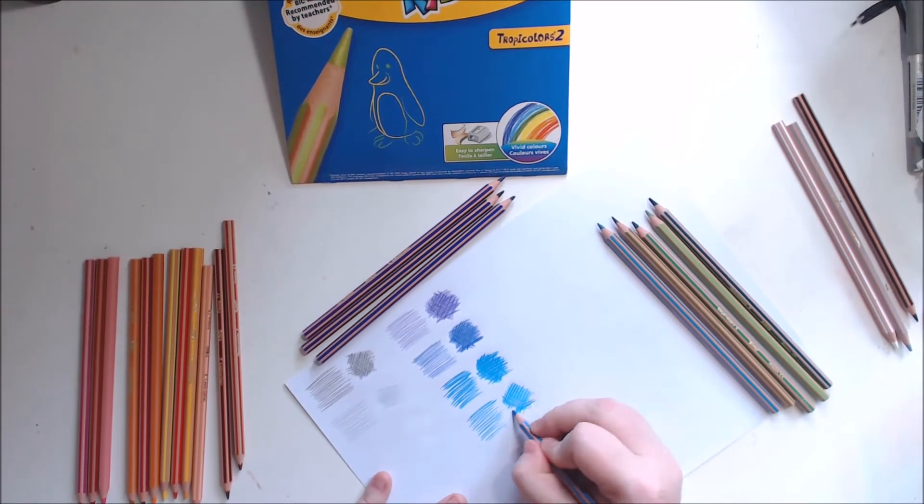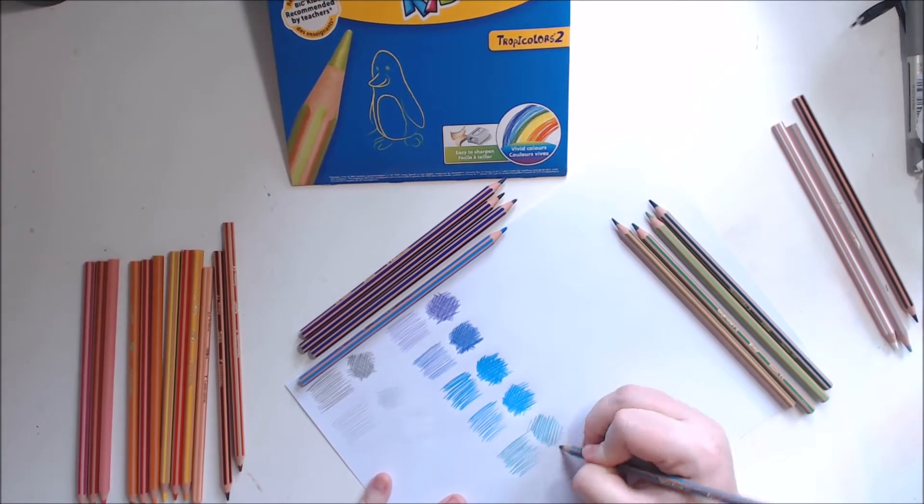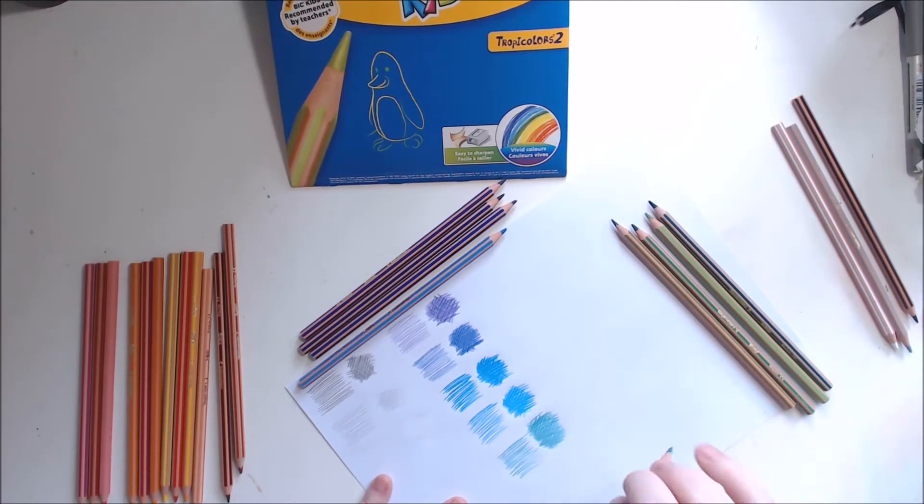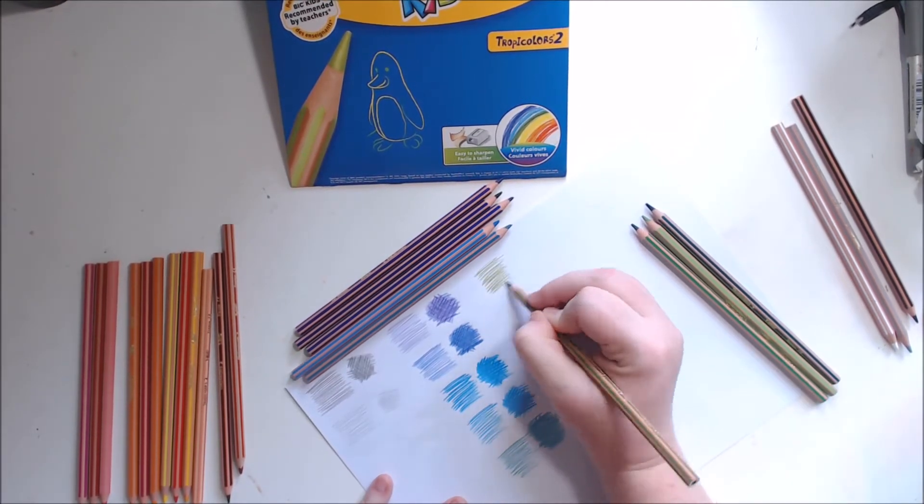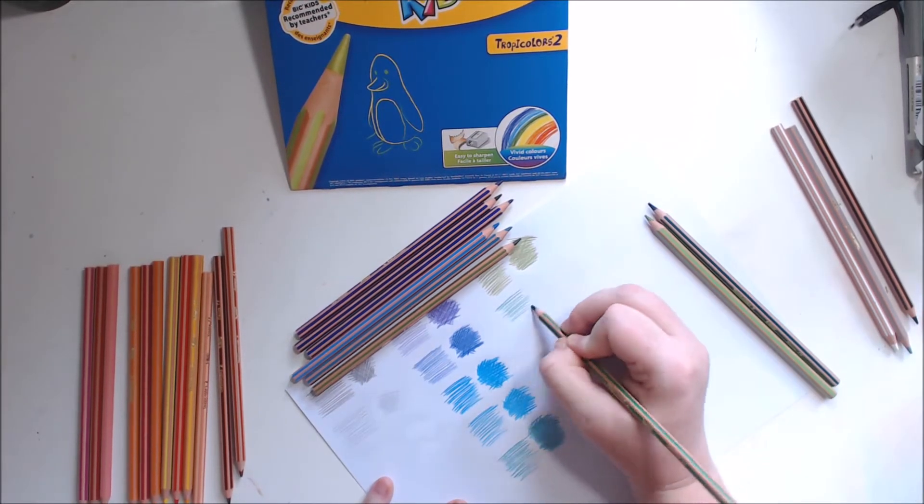So as I'm doing these swatches, you can sort of see that the one on the left is just a light swatch and the one on the right is a swatch with a few layers to try and get as much pigment as possible to see if you can see the true color matching to the outside of the pencil.